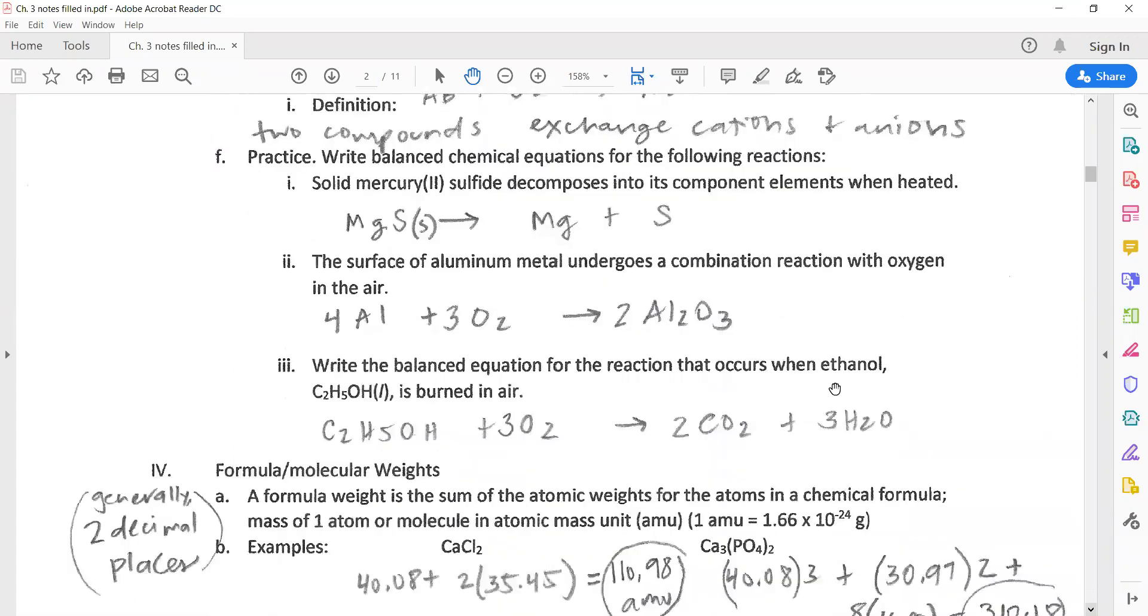Here's some practice of writing out reactions when you're given it in words. For example, solid mercury to sulfide decomposes into its component elements when heated. So HgS was a solid. It decomposed. We know that that means it breaks apart. So we put the individual atoms. You check and see, are either of these diatomic? No. The seven atoms that come as pairs when they're alone. I did leave out states of matter here because the problem didn't tell you the states of matter.